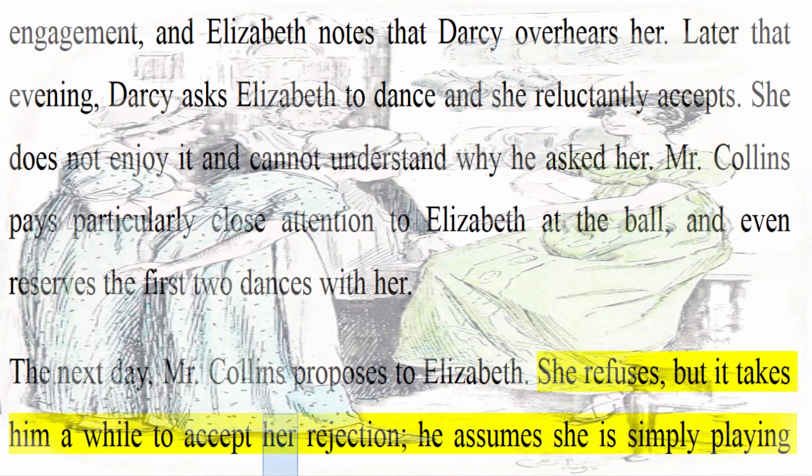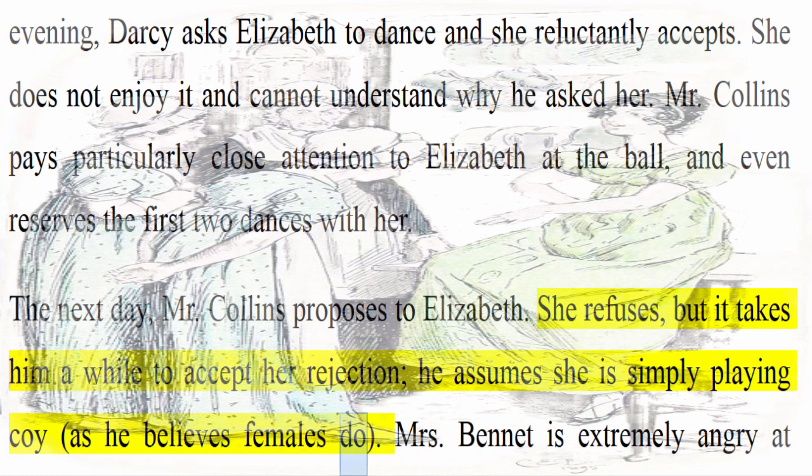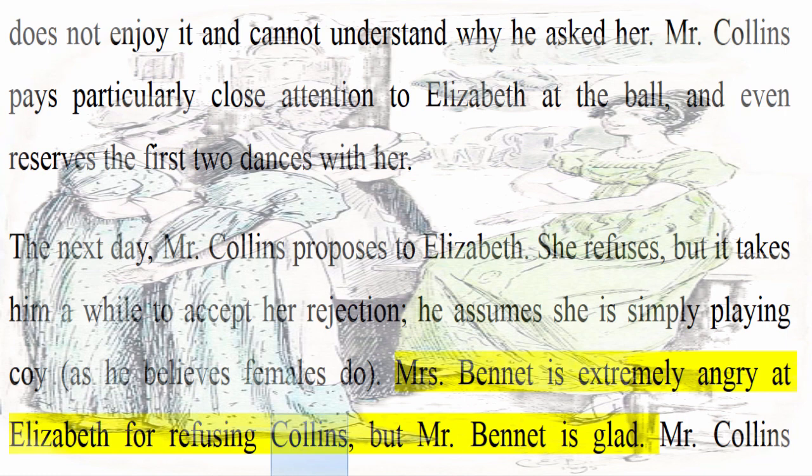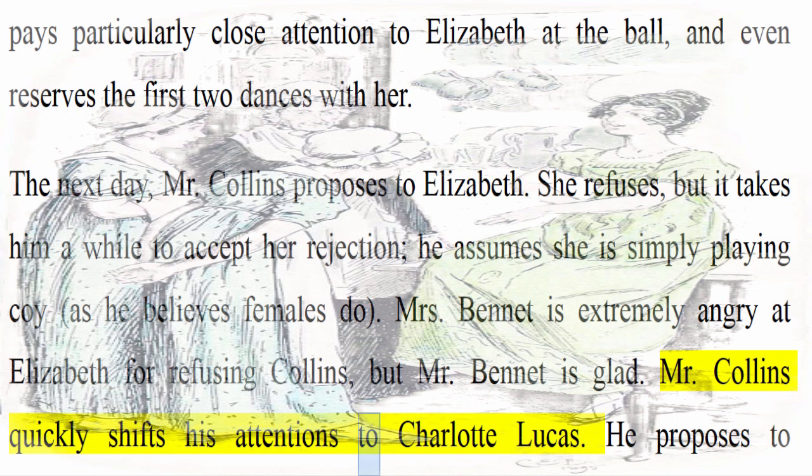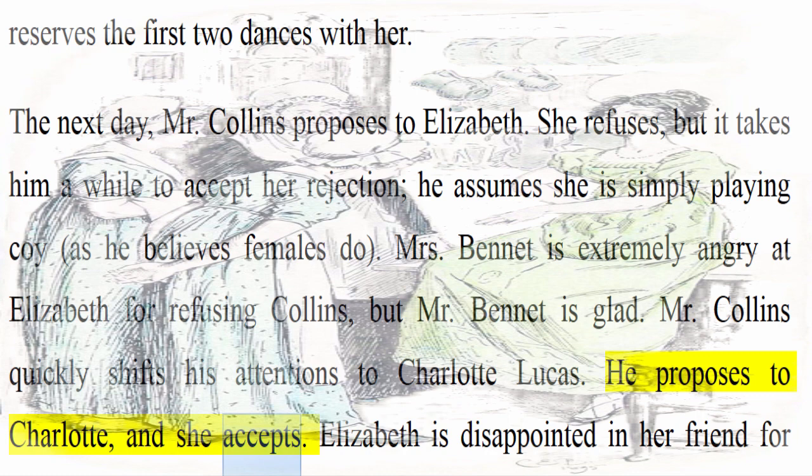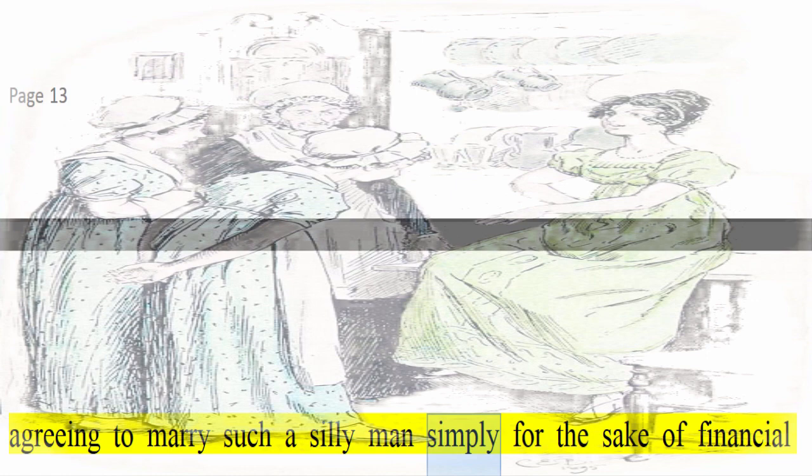Mrs. Bennet is extremely angry at Elizabeth for refusing Collins, but Mr. Bennet is glad. Mr. Collins quickly shifts his attentions to Charlotte Lucas. He proposes to Charlotte and she accepts. Elizabeth is disappointed in her friend for agreeing to marry such a silly man simply for the sake of financial security.